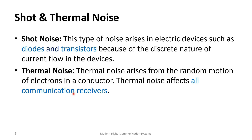Shot noise occurs in electric devices such as diodes and transistors, due to the discrete nature of the current flow — devices switch on and off, creating some transition with unexpected outcomes. Thermal noise happens due to the random motion of electrons in a conductor. Thermal noise affects all communication receivers, and you cannot have a system with zero thermal noise — that would require zero temperature.